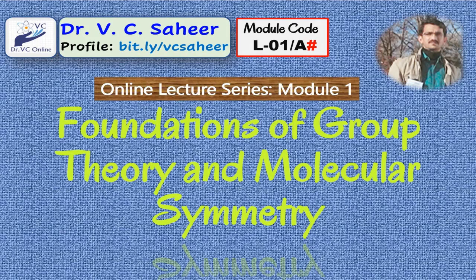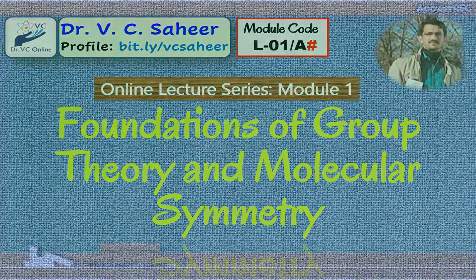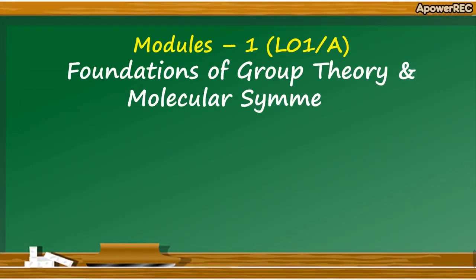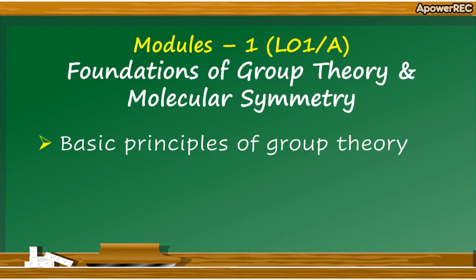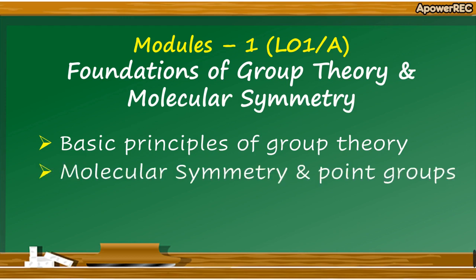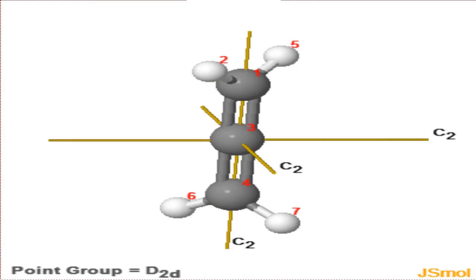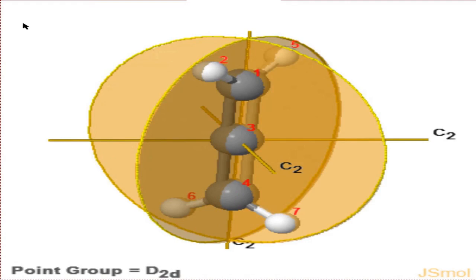Let me summarize the topics in the form of modules we will cover in this lecture series. In the first module, coded under L01-A, I will discuss the foundations of group theory and molecular symmetry. In the first part, I will cover the basic principles of group theory — the defining properties of a mathematical group — which are elementary but mathematical. Then I will discuss molecular symmetry and point groups, and to understand this part you need a three-dimensional imagination of the movement of a molecule in space. I will use three-dimensional models to explain the different symmetry operations associated with a particular molecule.